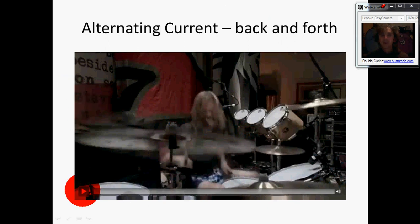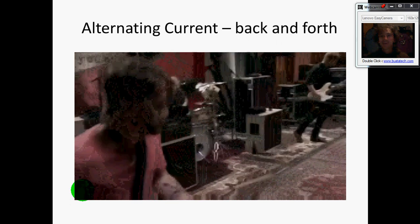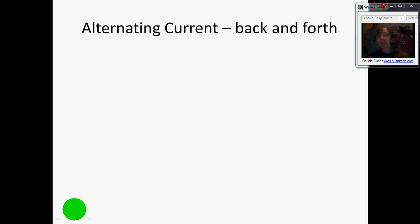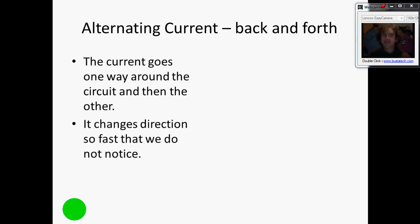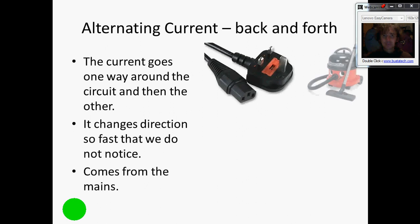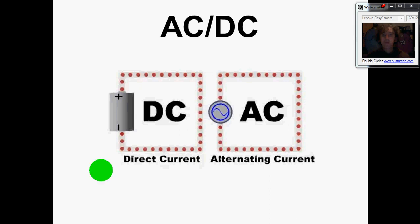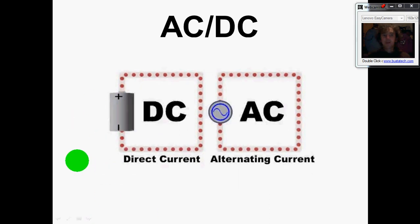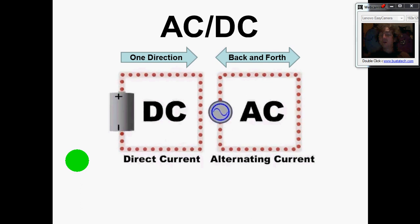The other type of current is alternating current. Alternating current goes one way around the circuit and then the other. We change direction so fast that we don't notice — it changes 50 times a second and it comes out of the mains. Anything that you plug in has to use AC current. Quick summary: DC goes in one direction; AC goes back and forth, 50 times a second in this country.